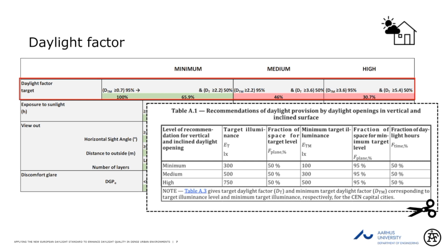We looked at the daylight factor and tried to display this so people can follow. Here are the requirements: minimum target illuminance 300 lux, which relates to a daylight factor of 2.2. At the same time, 95% of the surface area must also meet 100 lux. Then 65% must achieve 300 lux, then 46% for 500 lux, and 30.7% for the next level.